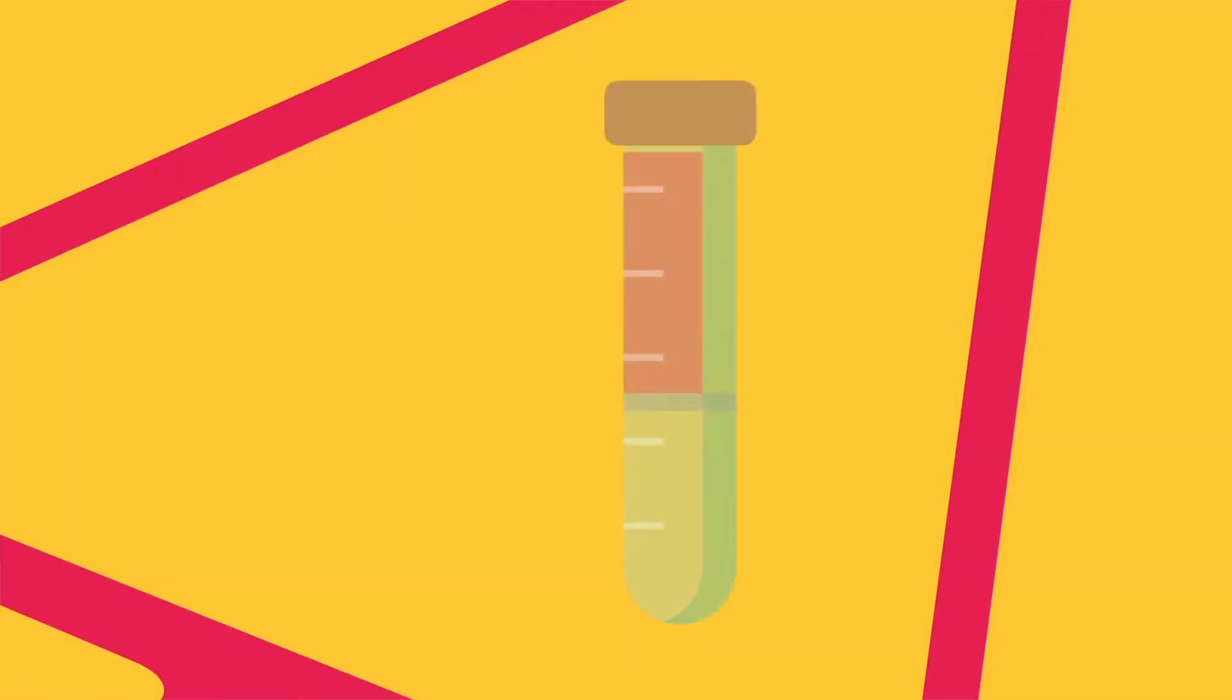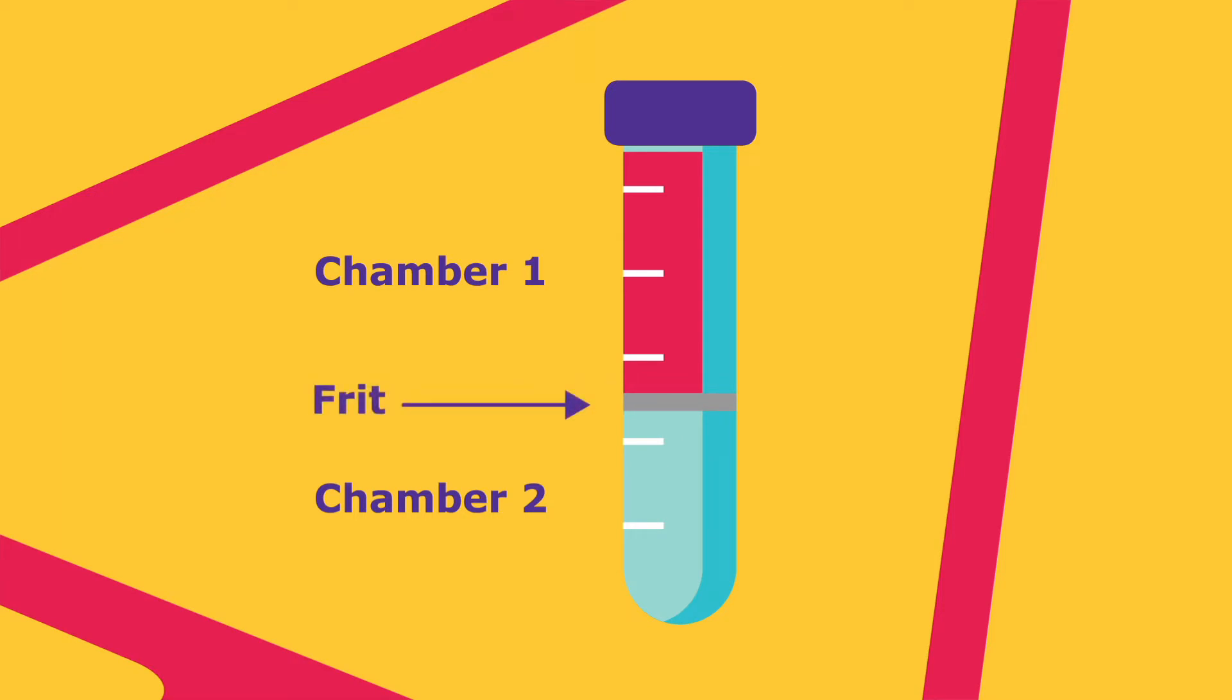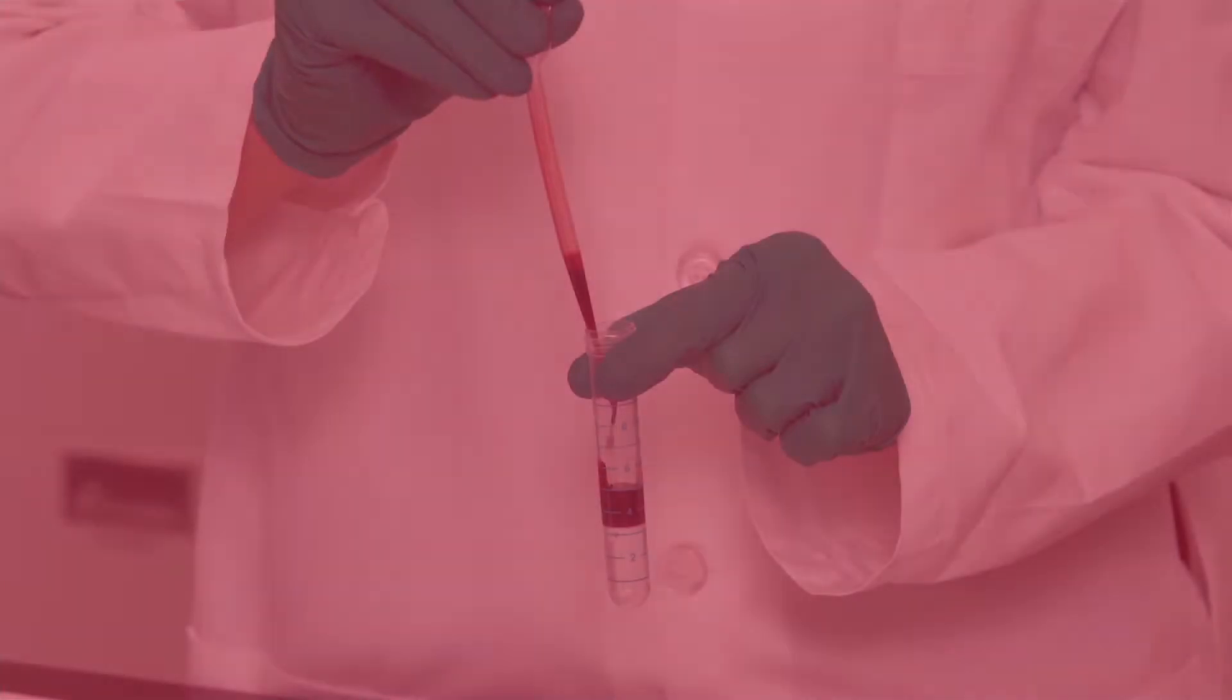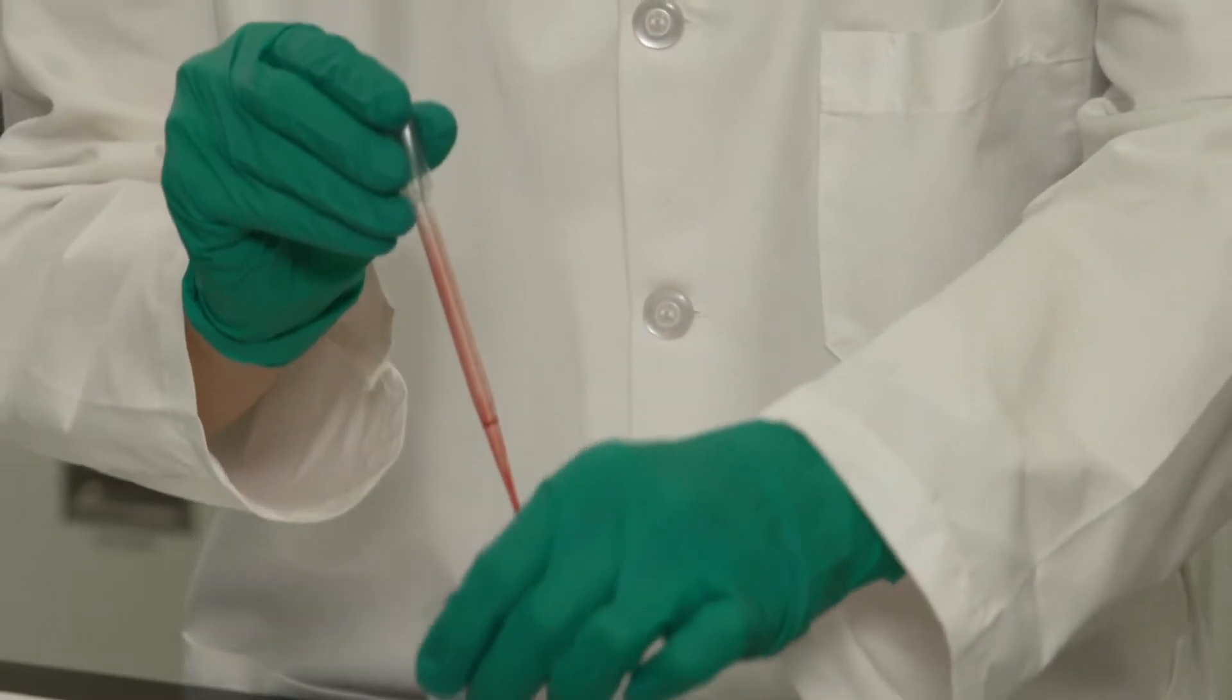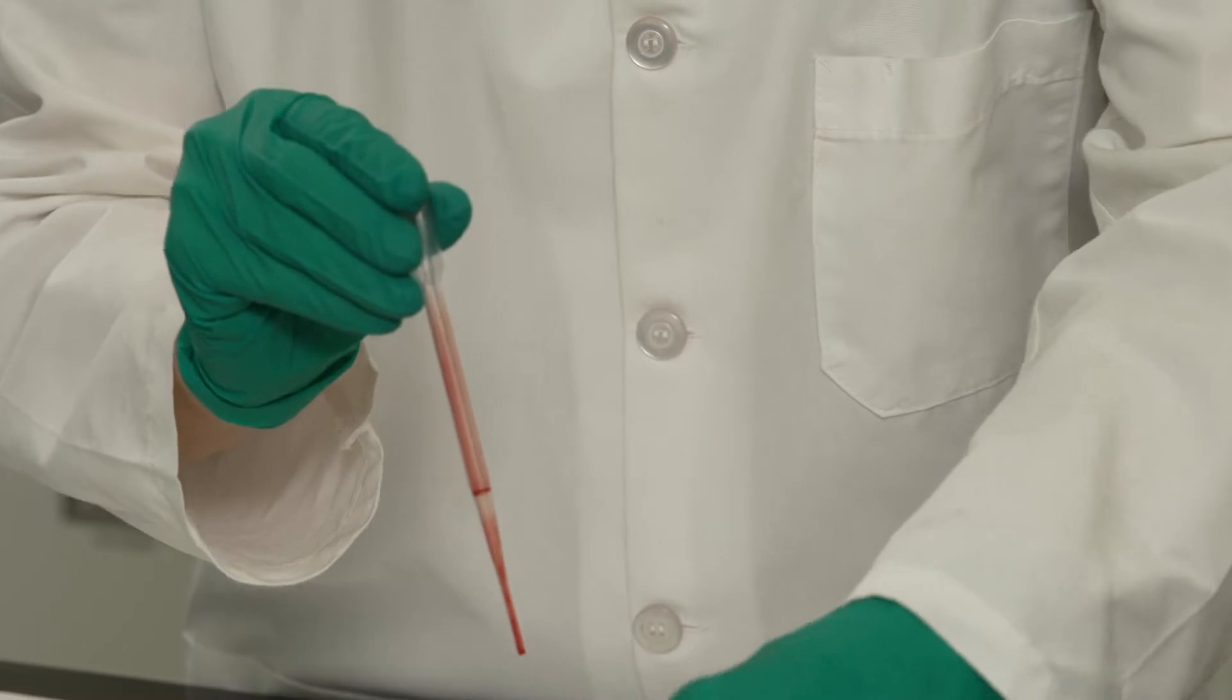The AccuSpin tube features a unique two-chamber design with chambers separated by a porous, high-density polyethylene barrier called a frit. This allows anticoagulated whole blood to be added to the top chamber without mixing with the histo-opaque reagents below the frit until centrifugation.